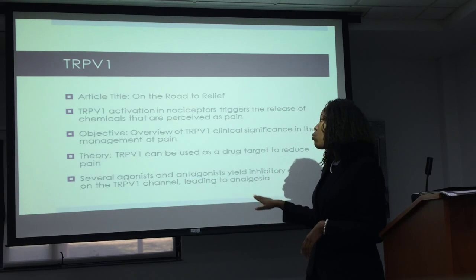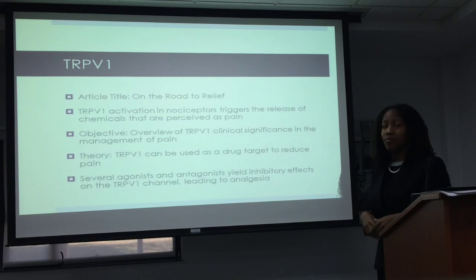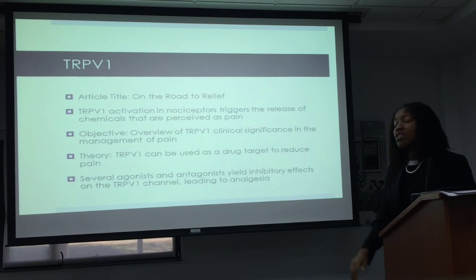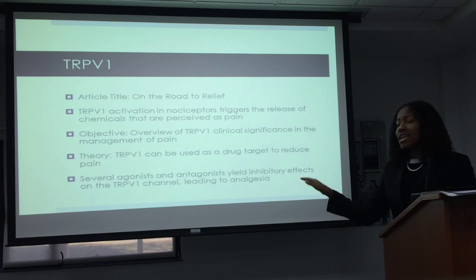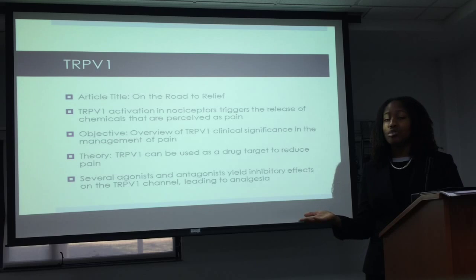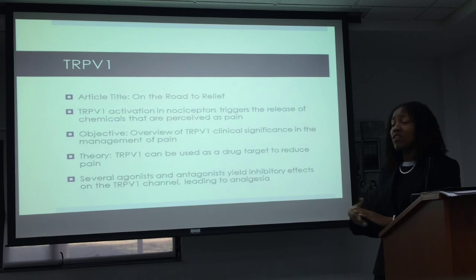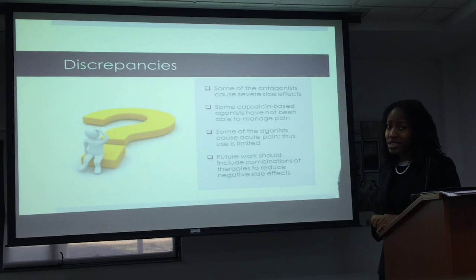The theory was that TRP V1 can be used as a drug target to reduce pain. Several agonists and antagonists were mentioned in this article, and they yield a lot of inhibitory effects on TRP V1 channels very successfully, leading to analgesia — which is reduced pain. That's one of the reasons I promote targeting TRP V1 channels, because it does give you the effect that you want. However, there are a few discrepancies I'd like to mention.